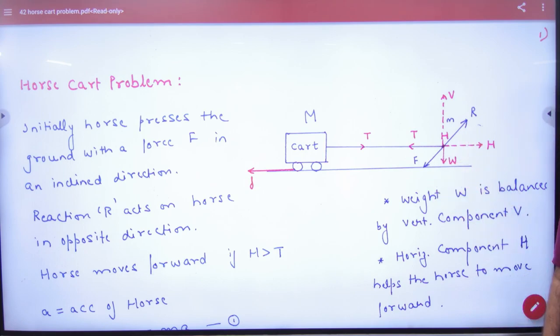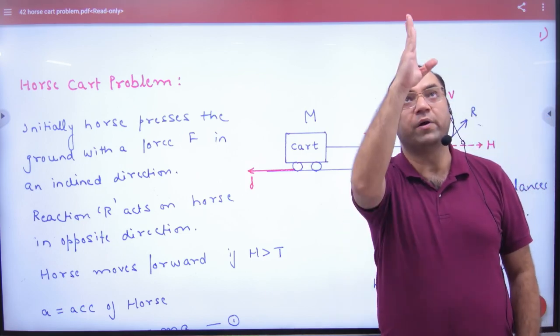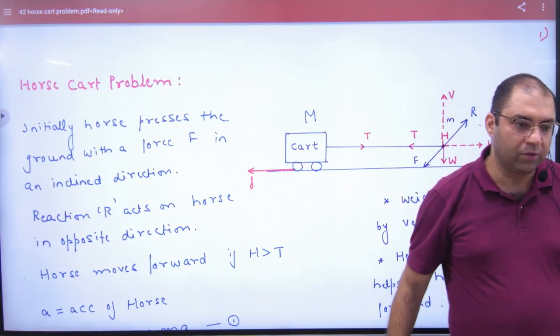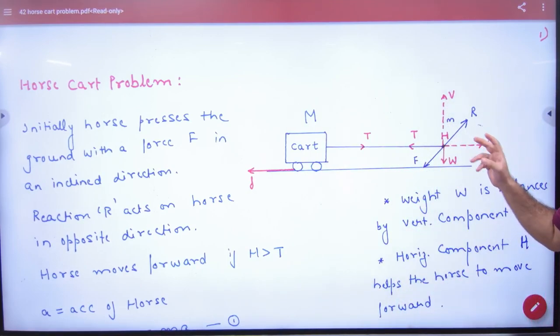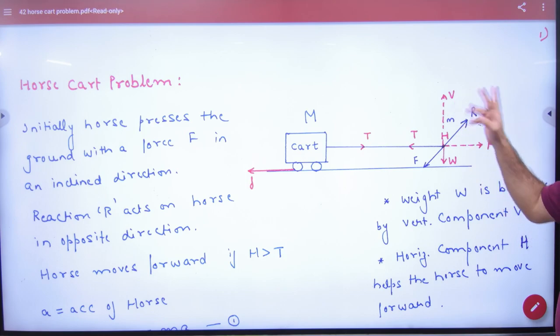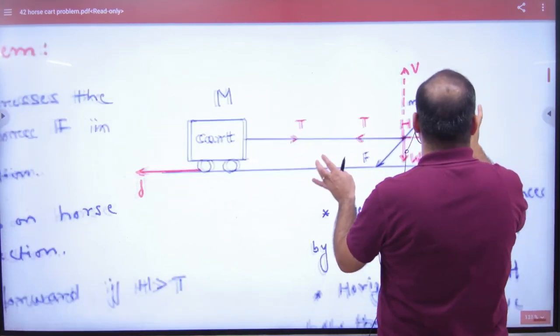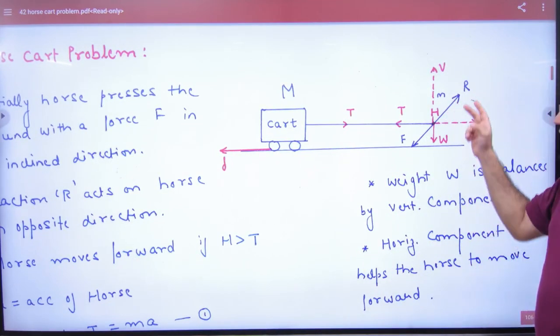When the horse puts force F on the ground, the reaction is in the opposite direction, R. If the horse is standing, then R is upward. If it puts force on the ground, the normal reaction is upward at an angle. This normal reaction will have two components: one horizontal and one vertical. If the angle is theta, we have R cos theta and R sin theta, or we can call them H and V - horizontal and vertical components.